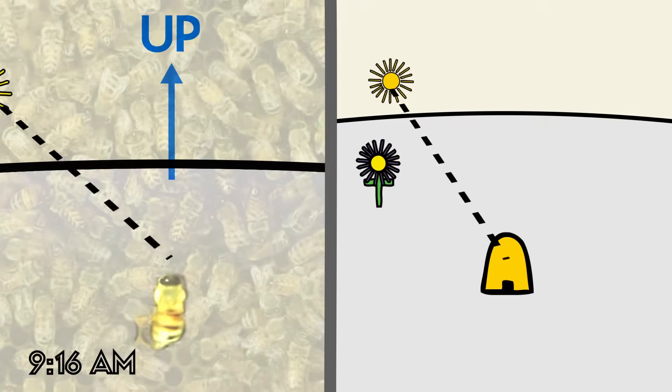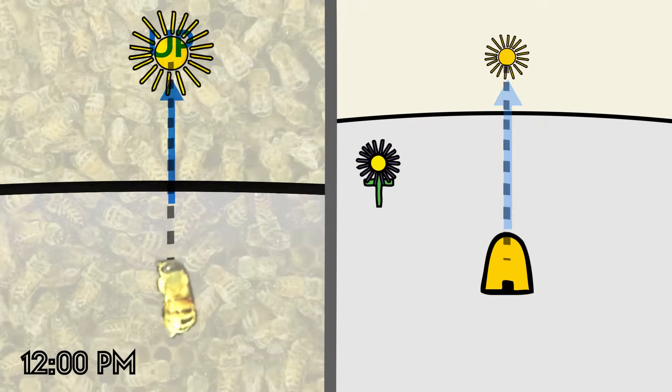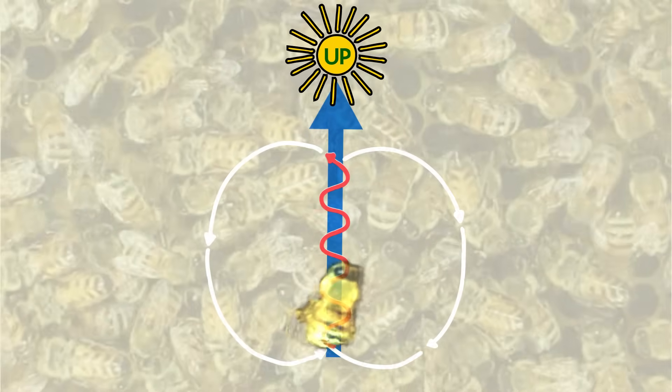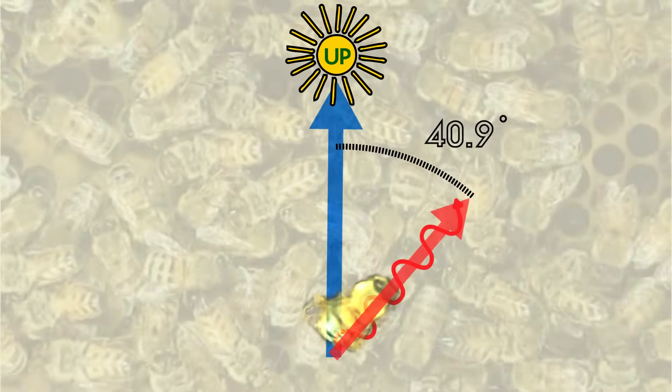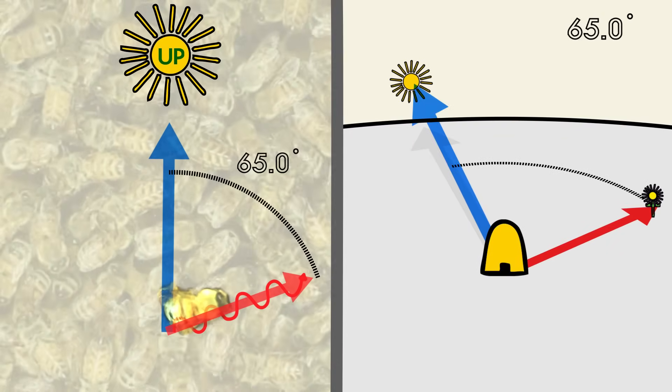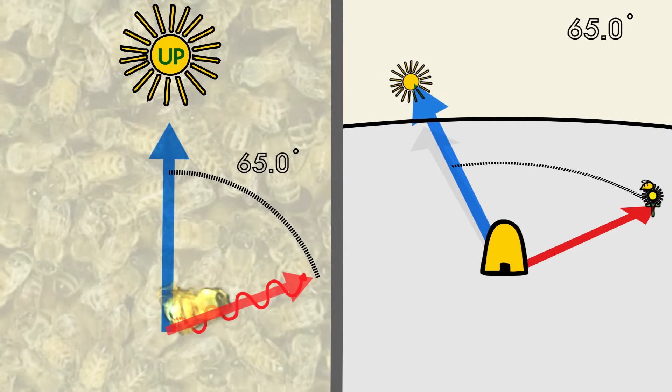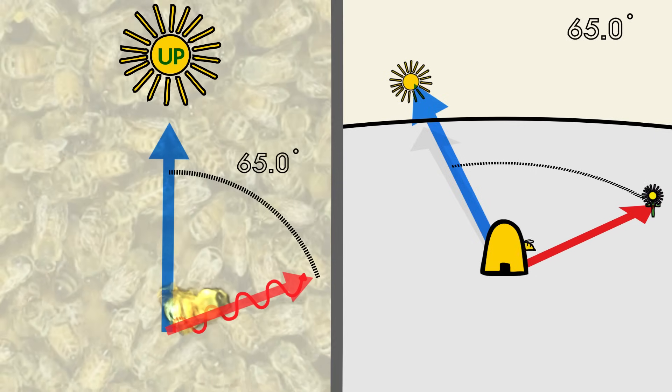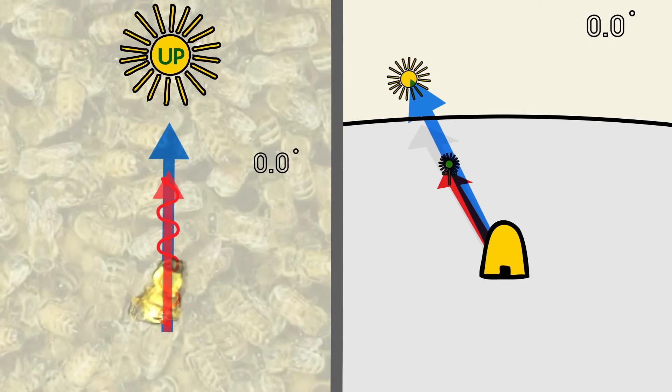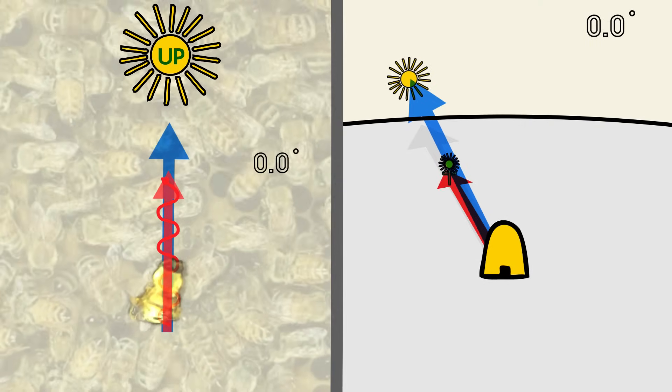Within the hive, the direction up, away from gravity, substitutes for the location of the sun. Then the angle that the bee dances compared to this up direction is the same angle a bee should fly away from the sun in order to find the target flower. So if the bee dances directly upward, other bees know that they can find flowers by flying directly towards the sun.